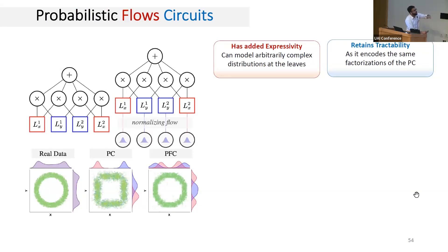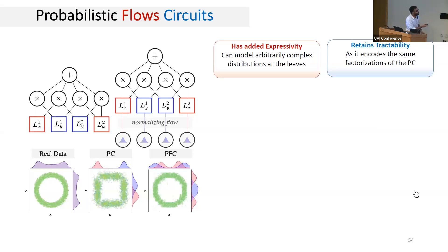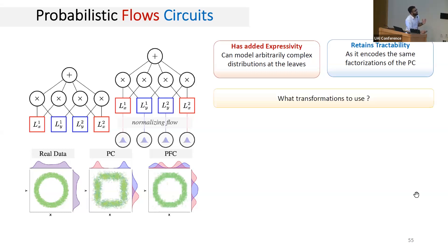We call the resulting class of models probabilistic flow circuits — essentially PCs with normalizing flows at the leaves, providing added expressivity for modeling more complex distributions at the leaves. For example, on a synthetic 2D circular data distribution, a simple PC with four product nodes and a sum node cannot model it faithfully since it can only learn unimodal Gaussians at the leaves. But a PC with the same structure incorporating a normalizing flow at the leaves can better approximate the distribution by learning multimodal distributions there.